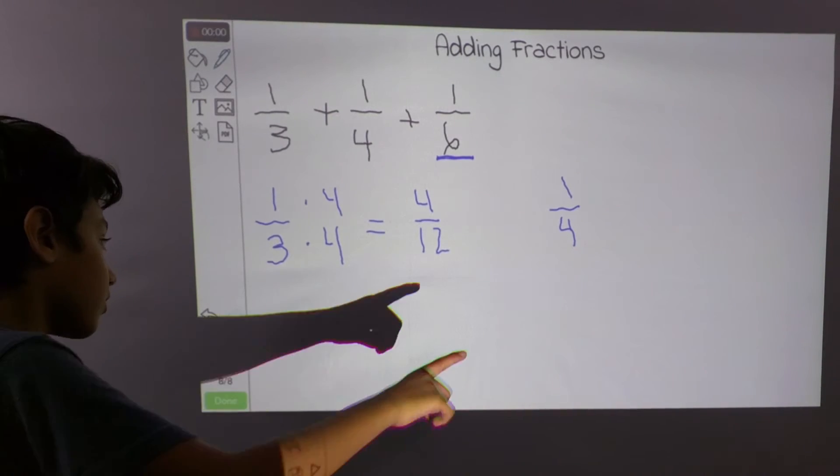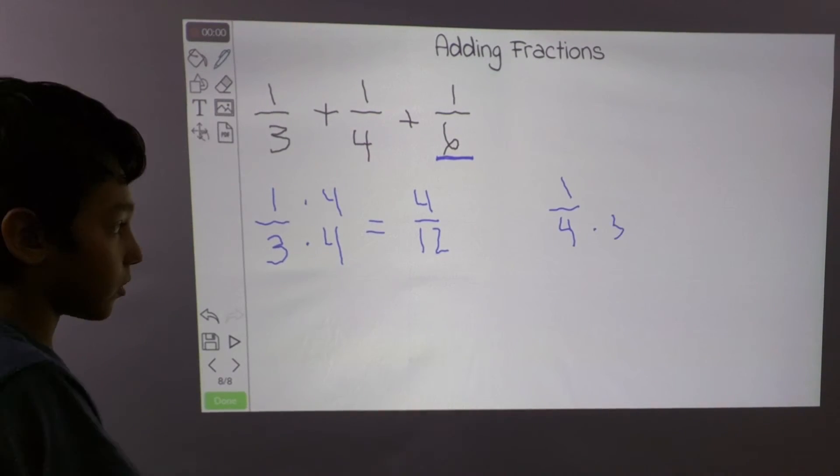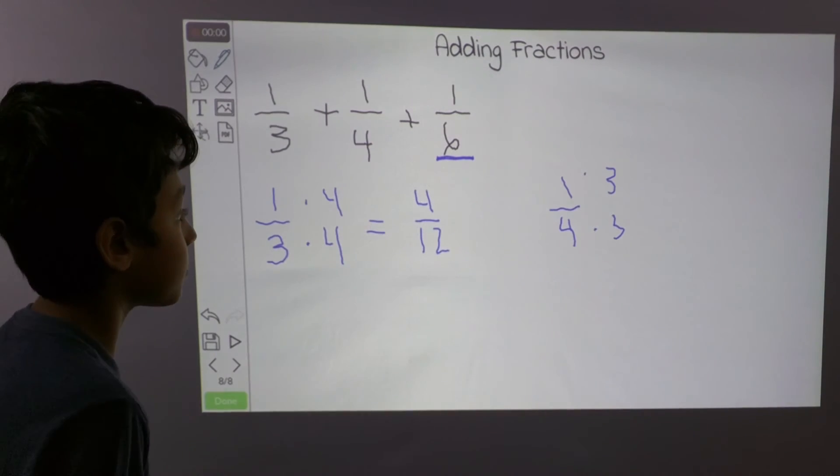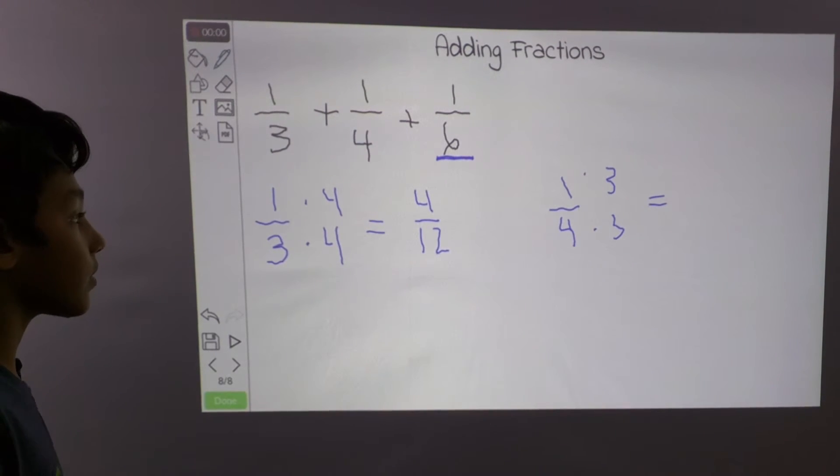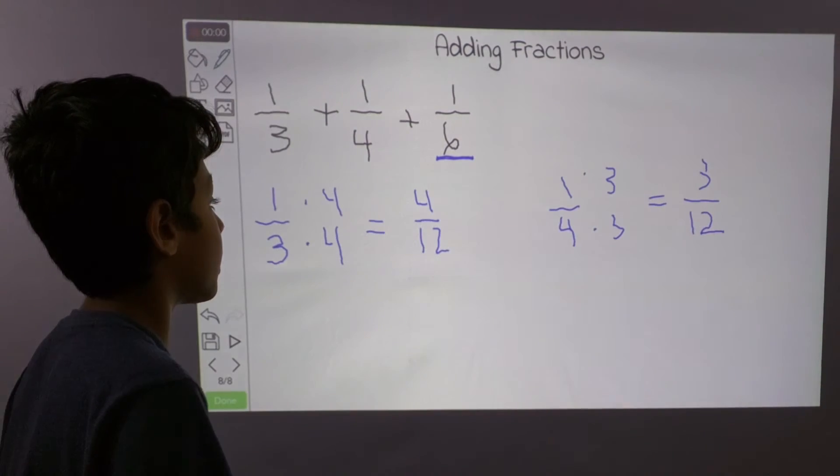Okay, we know that 3 times 4 is 12. So we multiply the denominator by 3, and the numerator by 3 also. So you get 3 over 12, and we have 1 over 6.